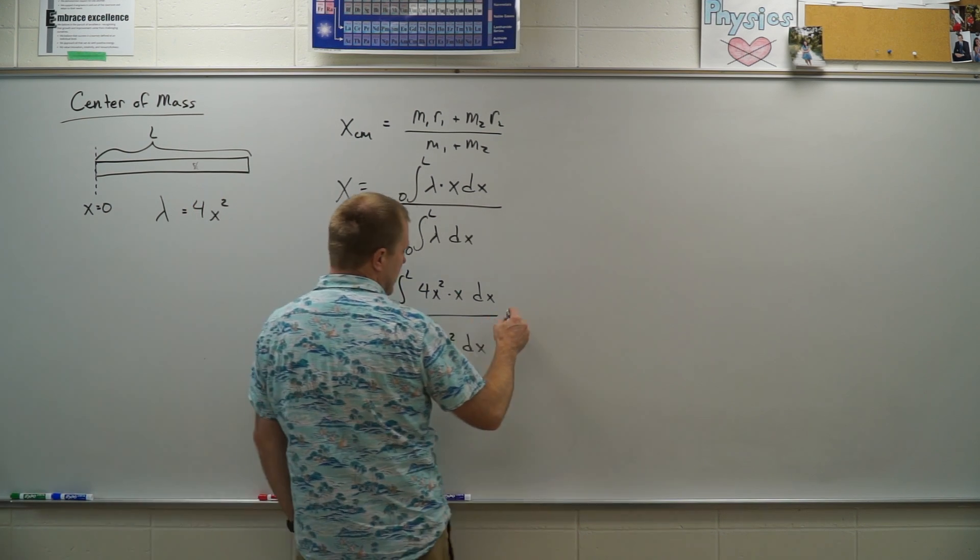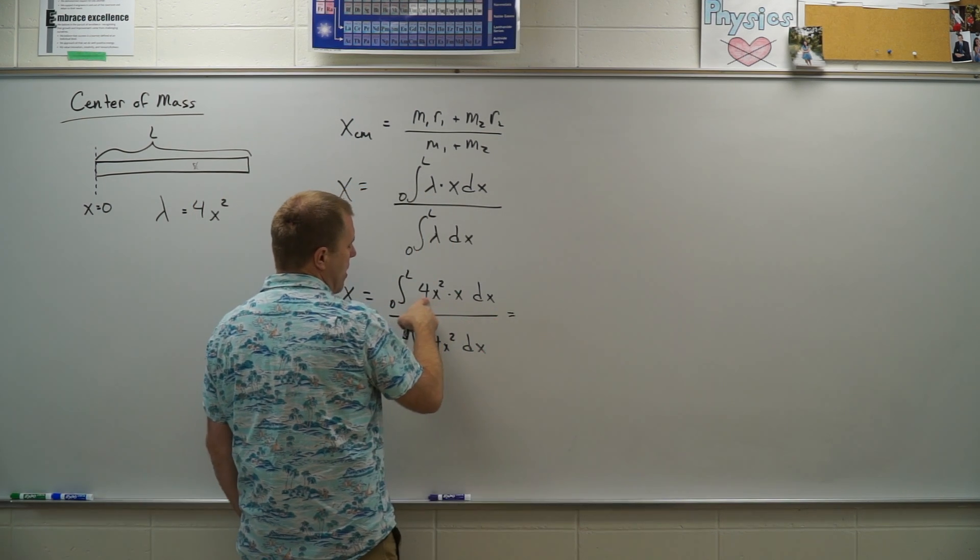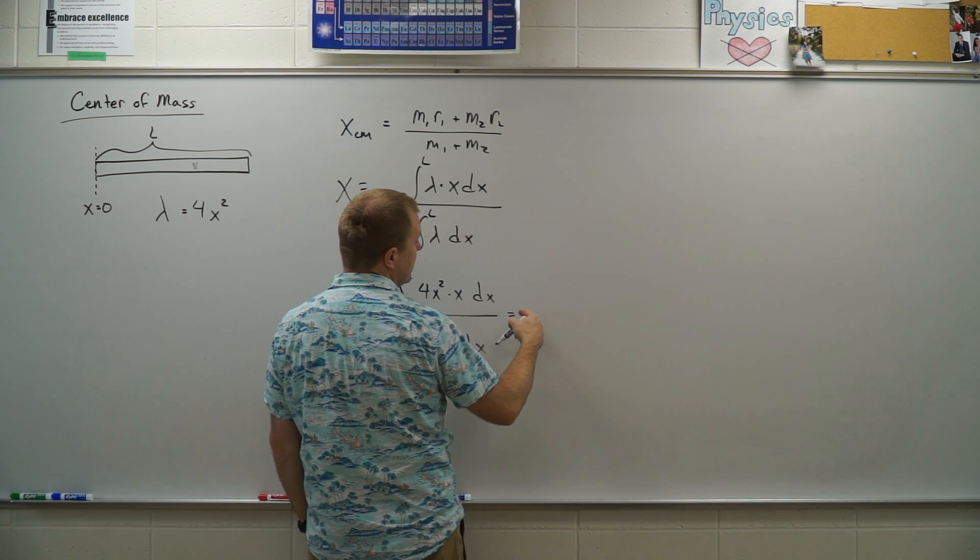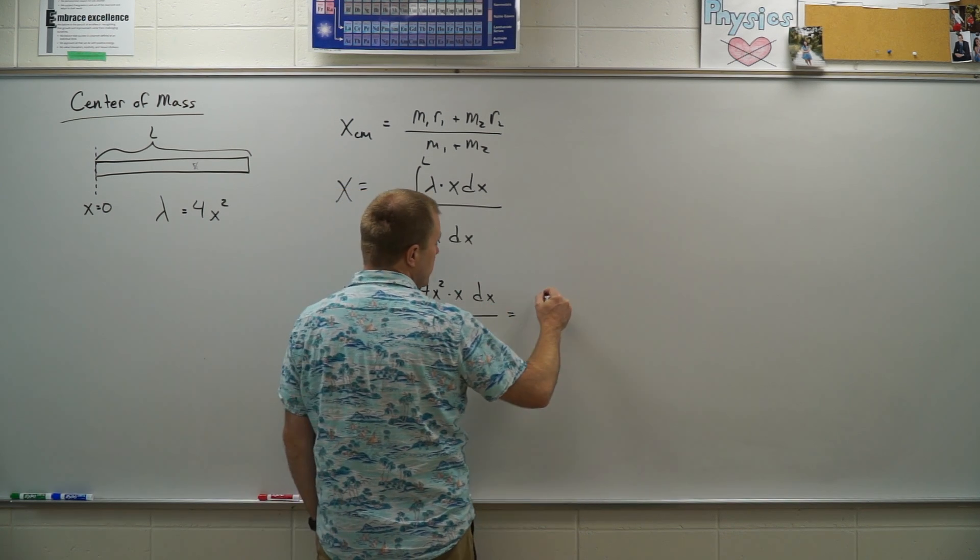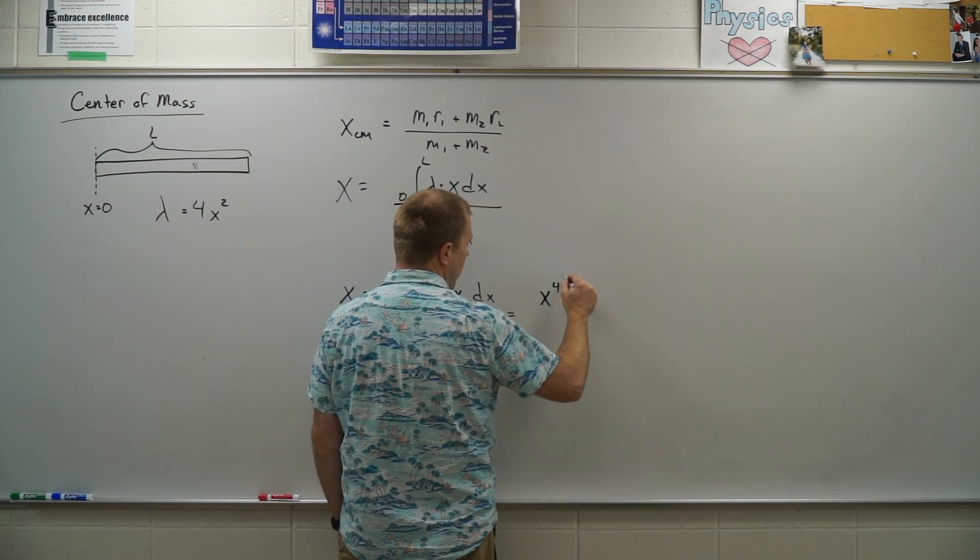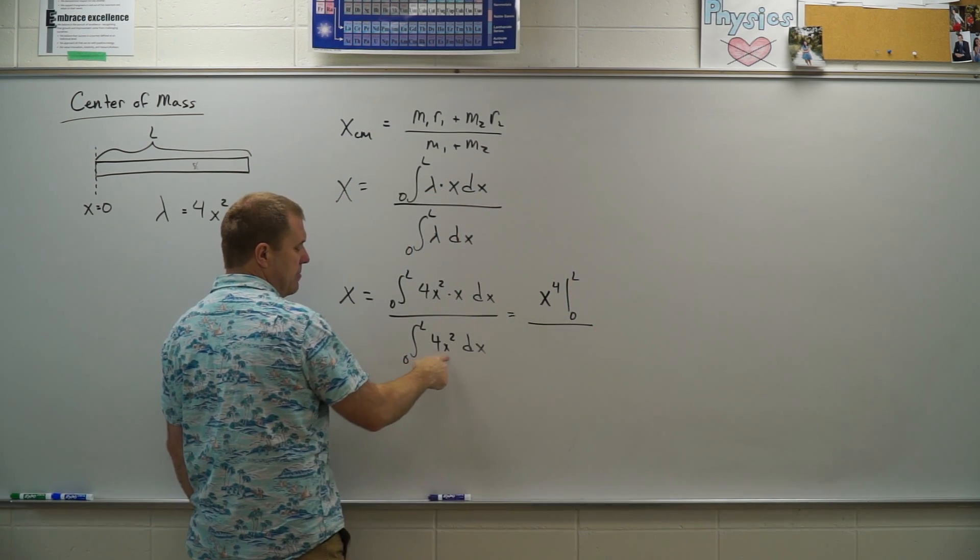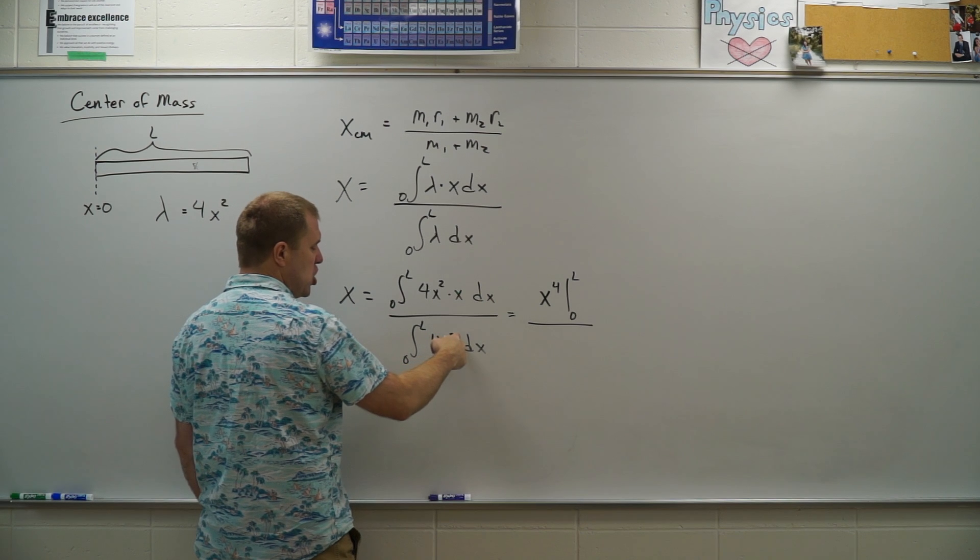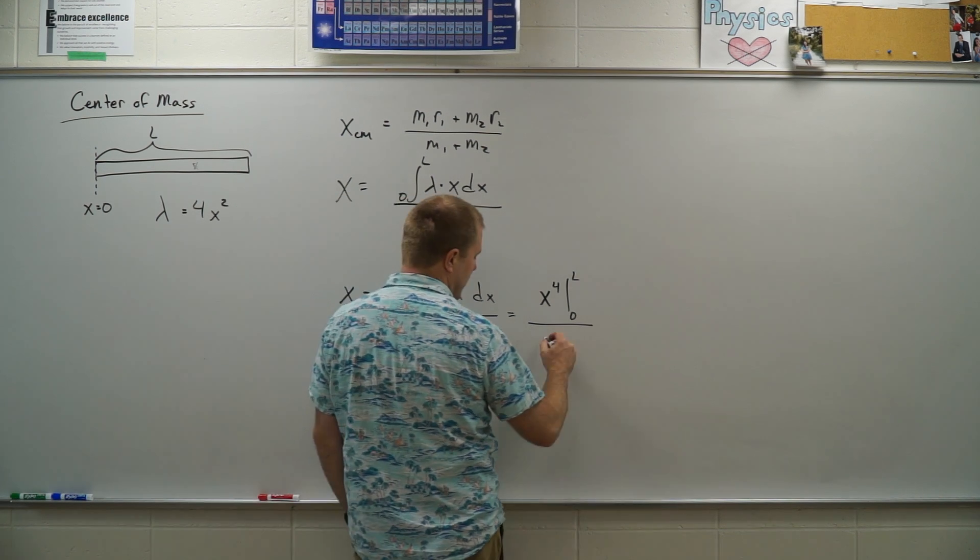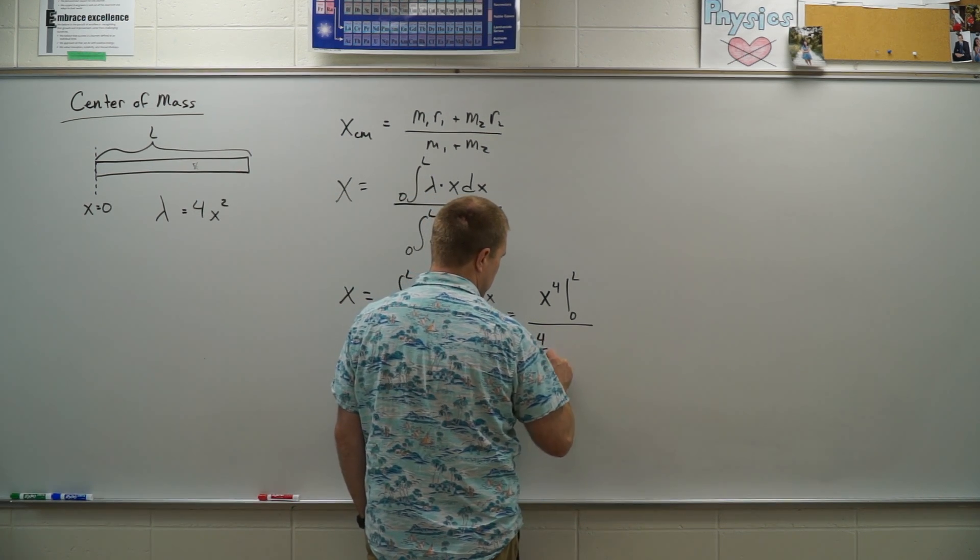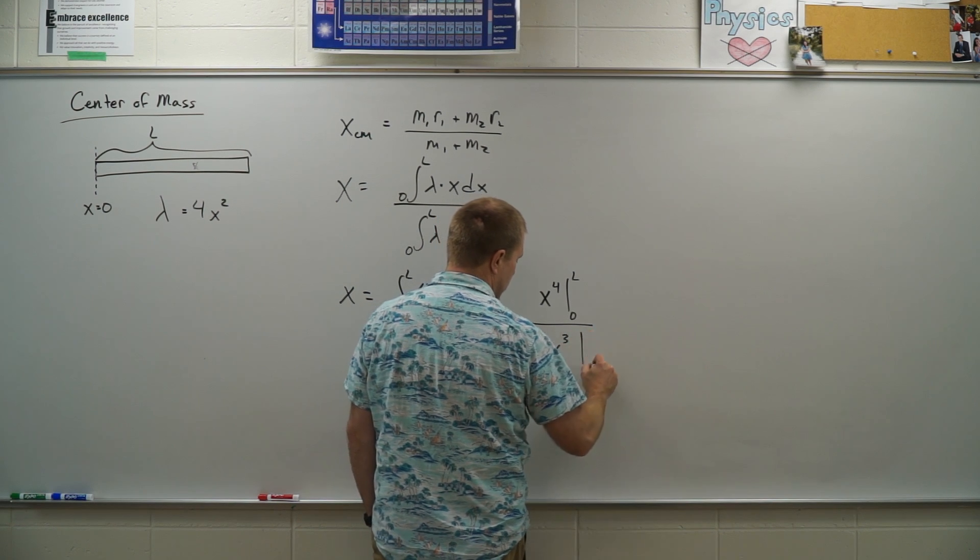So let's integrate these things here. So now I have 4x cubed. It's going to go to the fourth. So now I'm just going to have x to the fourth evaluated from 0 to L divided by, and on the bottom, this is going to become x to the cubed. So then I'll have four thirds x cubed evaluated from 0 to L.